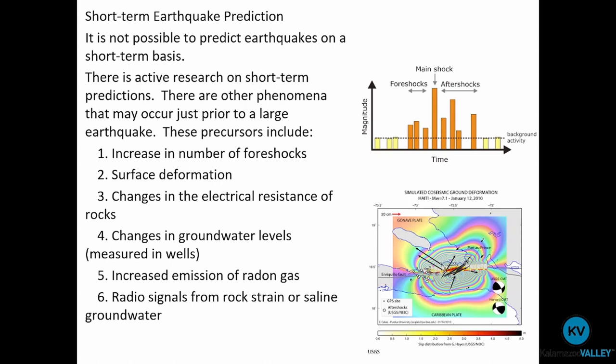We'll look specifically at the amount of time occurring between those foreshock earthquakes. The closer together they are, that's really when we're looking at having a lesser window of time before the main shock. We also need to consider the seismic history of the area. For example, the seismic history of Michigan looks really quite different from the seismic history of much of California, and because of that, we can set a baseline expectation for building preparations and materials.